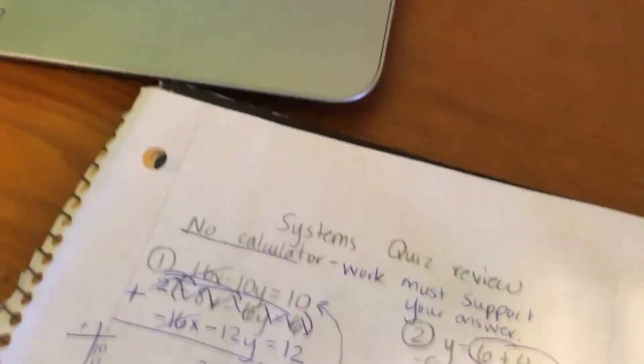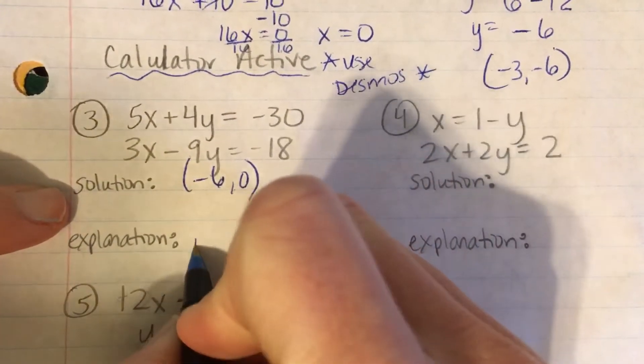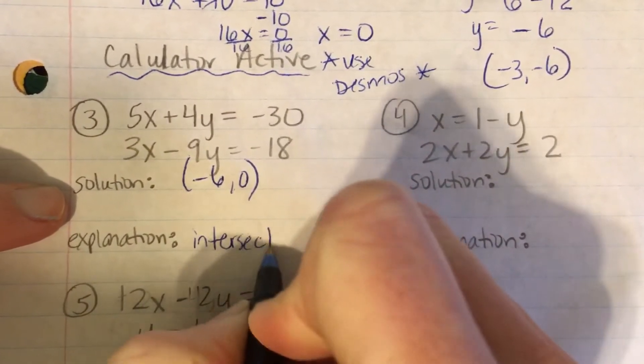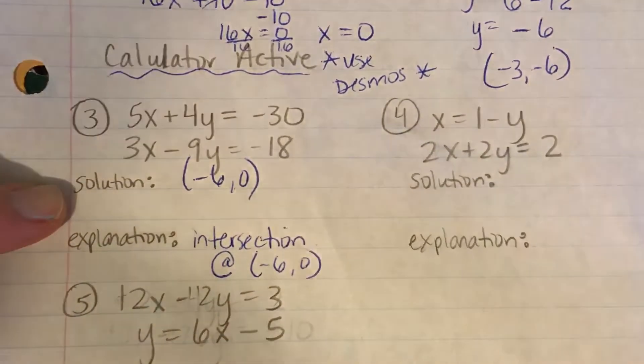And then, sorry. Alright, the solution is negative 6, 0. So the solution is negative 6, 0. And the explanation is their intersection is at negative 6, 0.